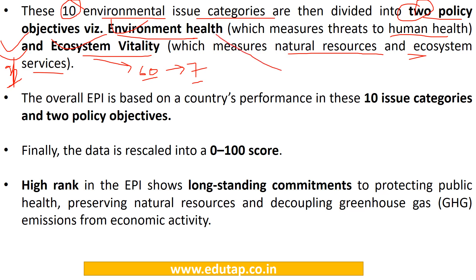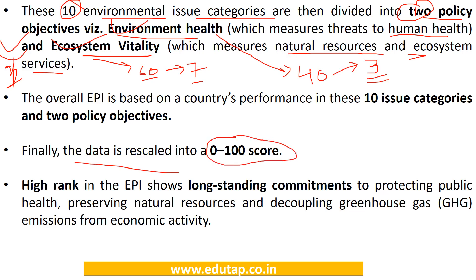On the other hand, environmental health has 40% weightage, covering only three issue categories: air quality, water and sanitation, and heavy metals. Finally, the data is rescaled into a 0 to 100 score, where a higher score indicates long-standing commitments to protecting public health and reducing greenhouse emissions.